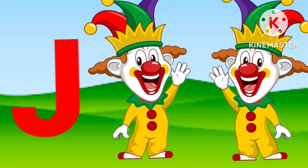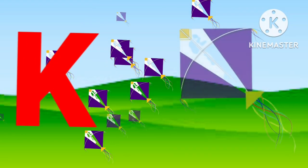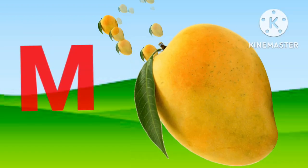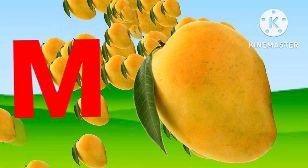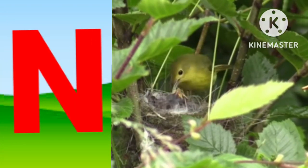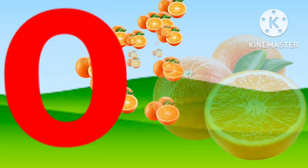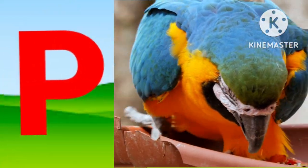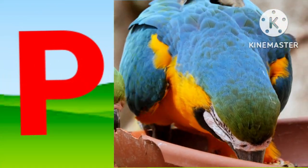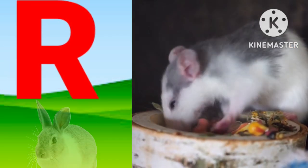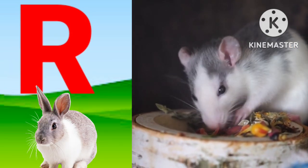J for joker, K for kite, L for lion, M for mango, N for nest, O for orange, P for parrot, Q for queen, R for rabbit.